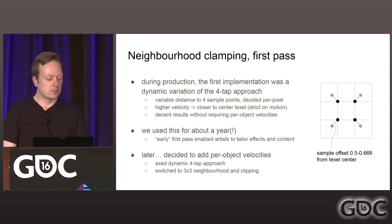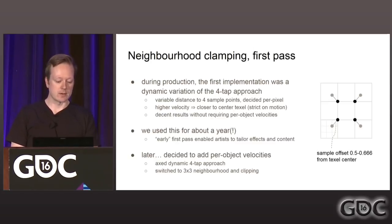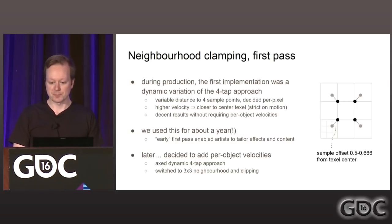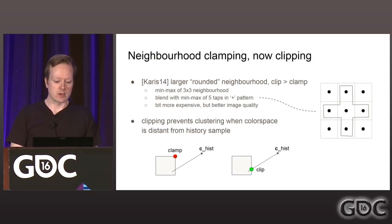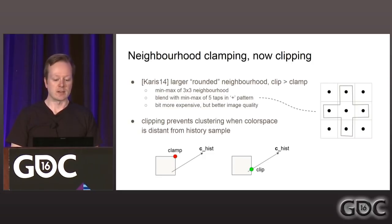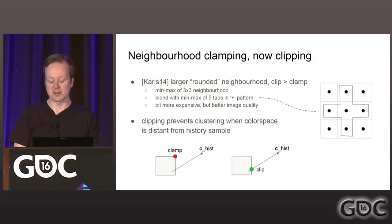Later in production we got more headroom, and I decided to scrap the dynamic four-tap approach and try to improve image quality. This coincided with another presentation by Karis, who suggested just using a three-by-three neighborhood and eating the extra cost from doing more samples. Karis uses a larger rounded neighborhood with clipping instead of clamping, blended with the minimum-maximum of five taps in a plus pattern. It's more expensive, but the image quality is better. As much as I loved the dynamic four-tap approach, this was just better — so we axed it.